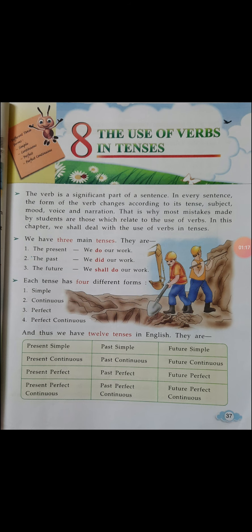The verb is a significant part of a sentence. In every sentence, the form of the verb changes according to its tense, subject, mood, voice, and narration. Verb is a doing word — a sentence cannot be complete without a verb, so it is very important to use the verb correctly.